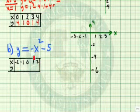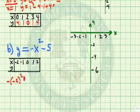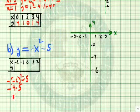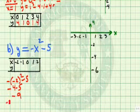If x is -2, I have negative (-2)²-5. Negative (-2)² is 4, so I have -9. So if x is -2, y is -9.